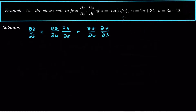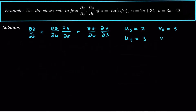Some of these are pretty easy to calculate. u_s is just 2, v_s is 3, u_t is 3, and v_t is negative 2. So actually those derivatives are pretty easy to calculate.